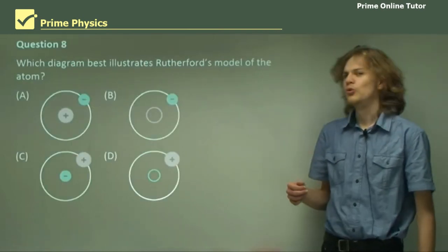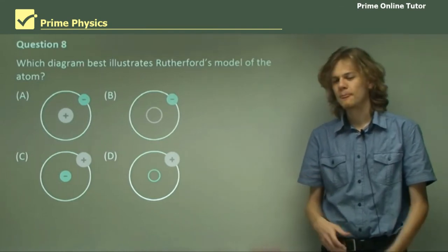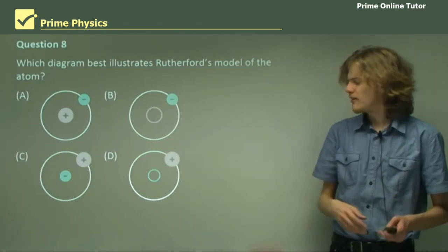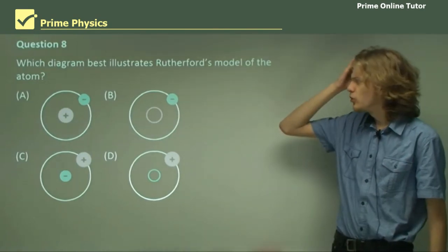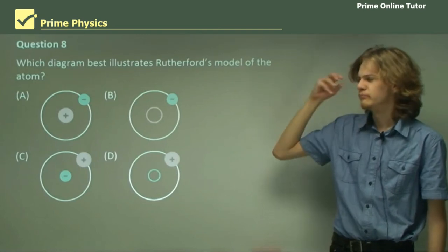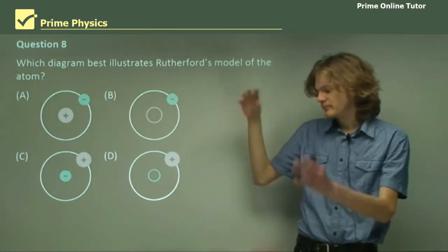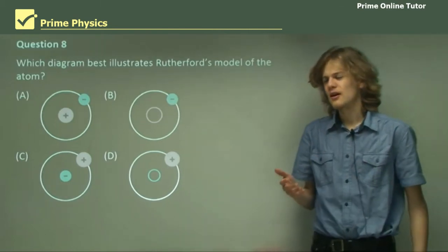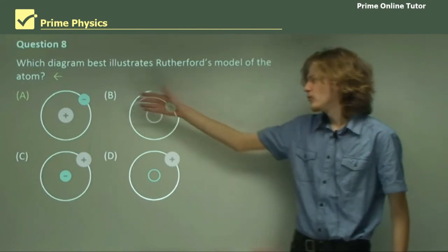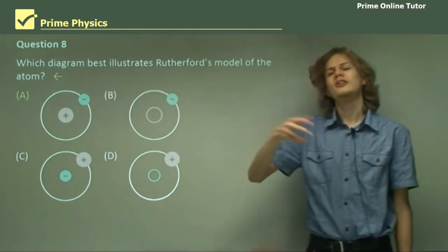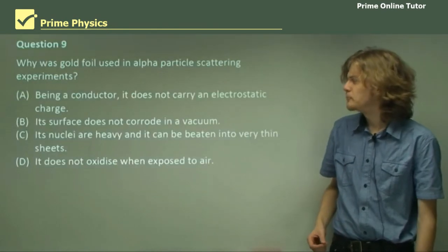Question eight. Multiple choice, fantastic. Which diagram best illustrates Rutherford's model of the atom? If we think about this a bit, we have something in the middle in each case, and something orbiting it. In B and D, we have a neutral middle, and that's not really right. In D, we have a positive charge orbiting a negative charge, which isn't right either. In fact, the correct answer is, of course, A. We have negatively charged electrons orbiting a positively charged, very dense, nucleus.